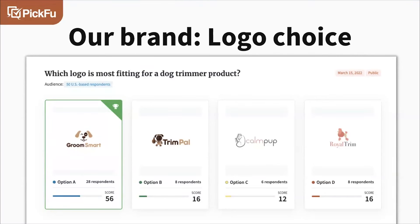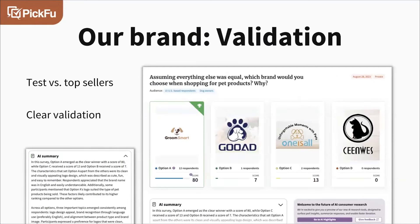For logos, our designer gave us several logos and brand names to test as we developed our brand identity. The 'Groom Smart' logo with the dog was the winner in our own test, but it's not enough to just win internally — we need to win against the competition. So we validated it against other brands. The 'Go Add' brand was a top competitor winning clicks, but our hypothetical Groom Smart brand did quite well against even that top-selling brand by branding alone.